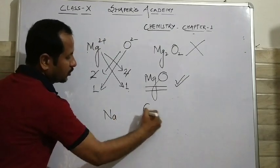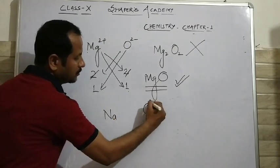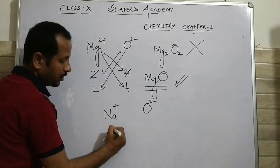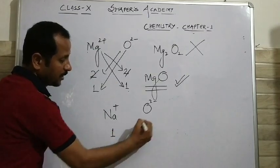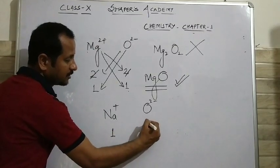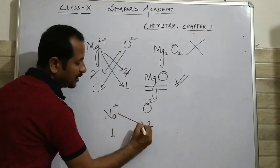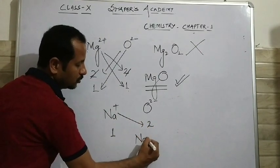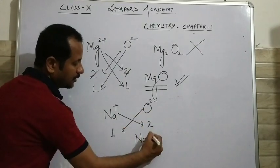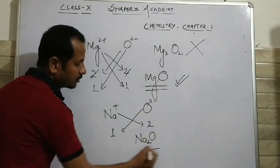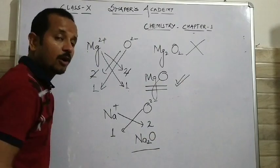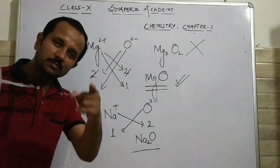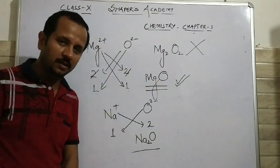Next example: sodium oxide. Sodium valency is 1, oxide valency is 2. So how many sodium will be there? 2. How many oxide will be there? 1. So this is the formula Na₂O — sodium oxide.